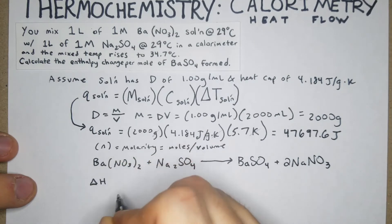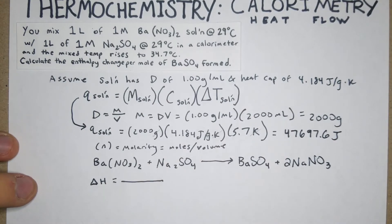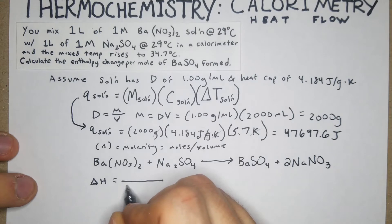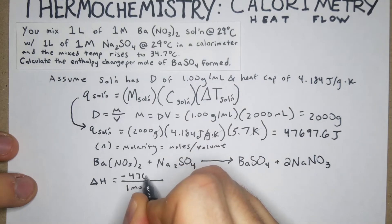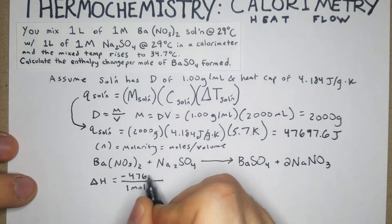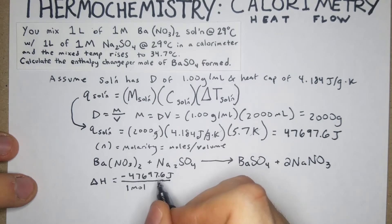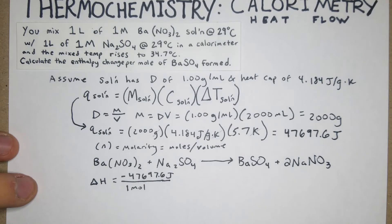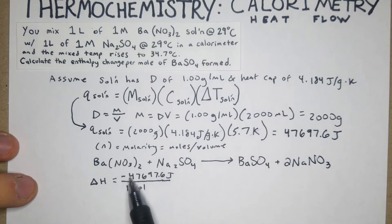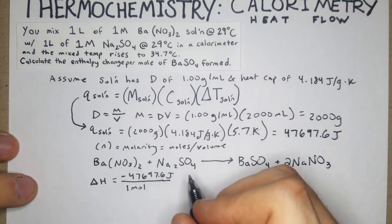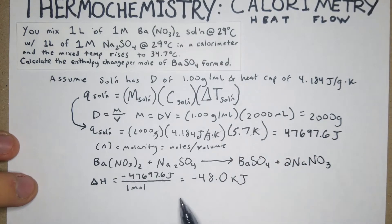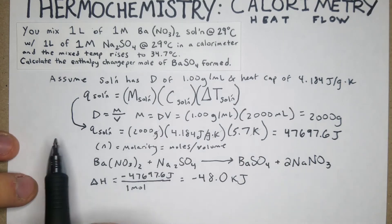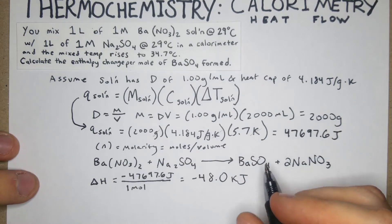We calculate ΔH per mole of BaSO₄. We have negative 47,697.6 joules over 1 mole of BaSO₄ — from the balanced equation there is only 1 mole formed. Converting to kilojoules gives us −48.0 kJ/mol. That is our answer.